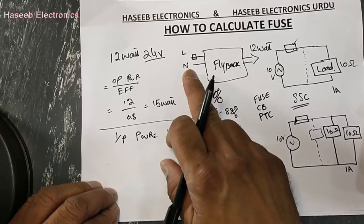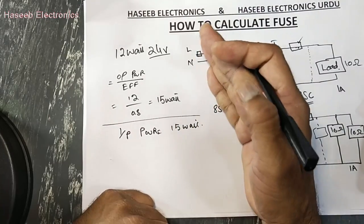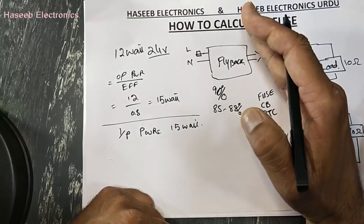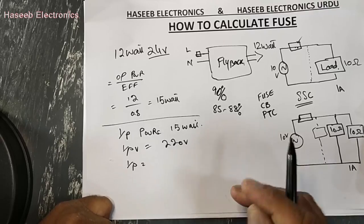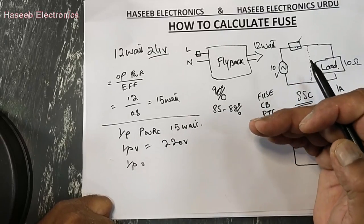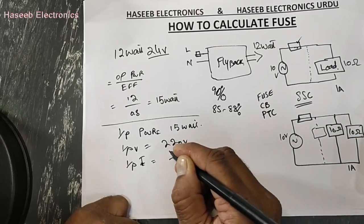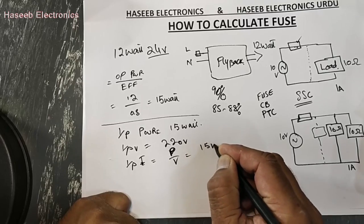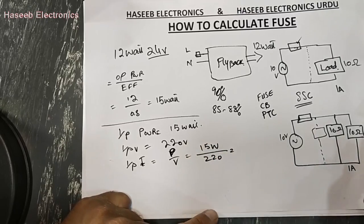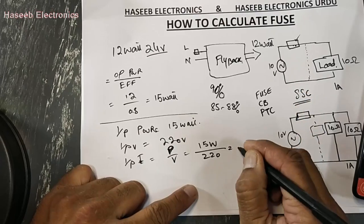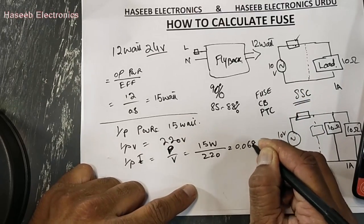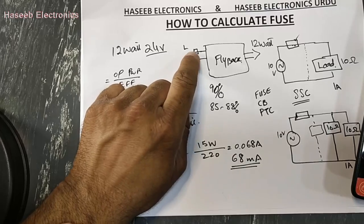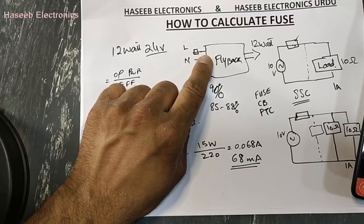We are operating this power supply at 90 volt to 265 volt, or we will consider 220 volt. The maximum limit input current — because the fuse is directly involved with the current — is power divided by voltage: 15 watt divided by 220 volts equals 0.068, or 68 milliampere. This is the circuit current required at 220 volt so that this power supply will give us 12 watt after all the losses and drops.